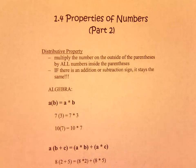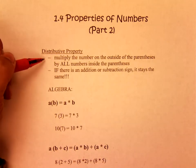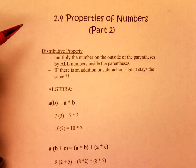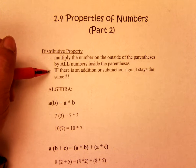Okay, so today's lesson is 1.4, Properties of Numbers, Part 2. Today you're going to learn about Distributive Property. To find Distributive Property, you multiply the number on the outside of the parentheses by all the numbers inside the parentheses. If there is an addition or subtraction sign, it stays the same.